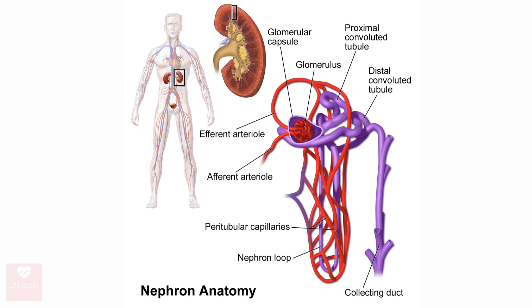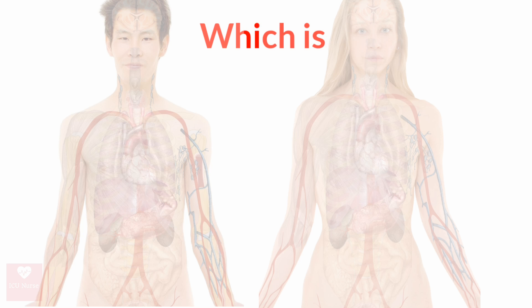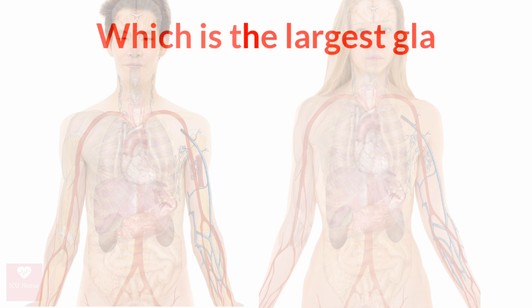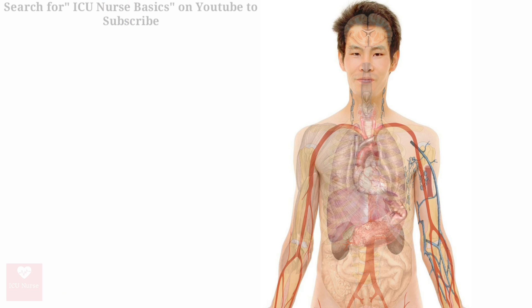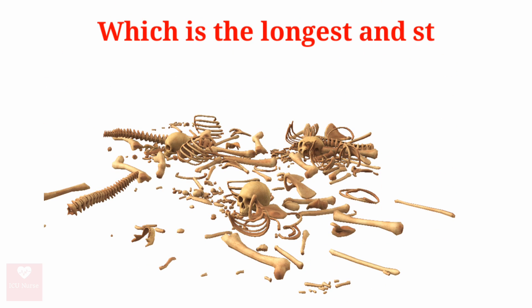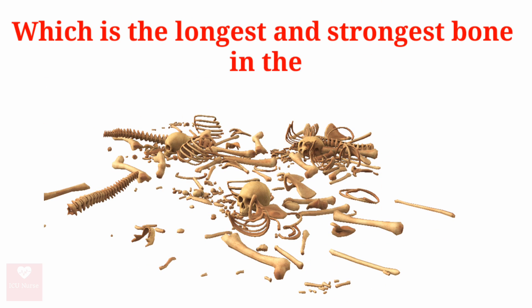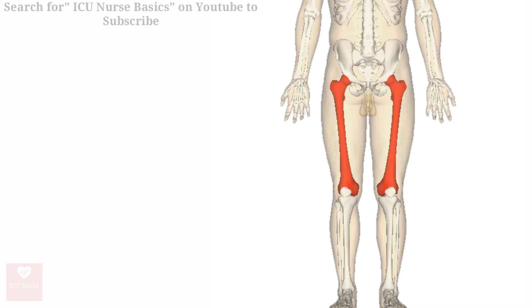What are the structural and functional units of the kidney? The structural and functional units of the kidney are the nephrons. Which is the largest gland in the human body? The largest gland in the human body is the liver.